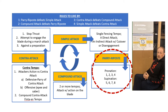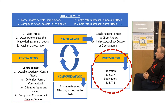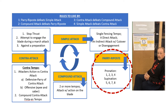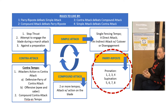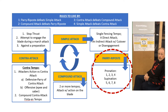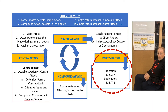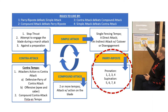Parries can be done pronated or supinated. Pronated parries are parries 1, 2, 3, and 4. Supinated parries are 5, 6, 7, and 8. The numbers are irrelevant. The main focus is on pronated versus supinated parries, and the focus is on making an action that will prevent the initiation of the simple attack from succeeding.